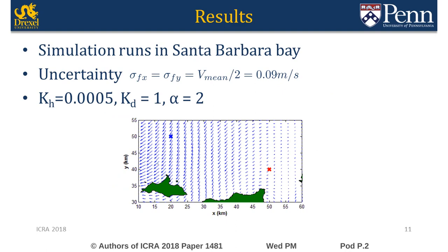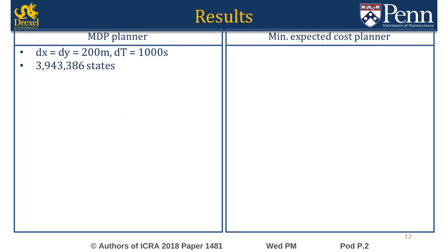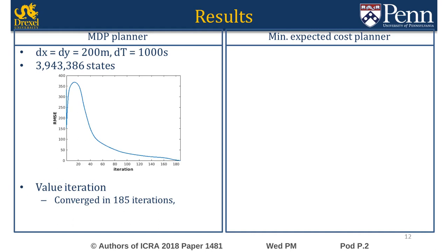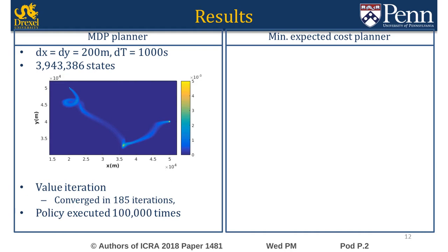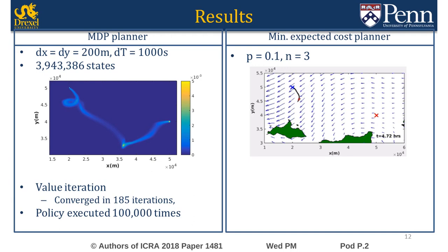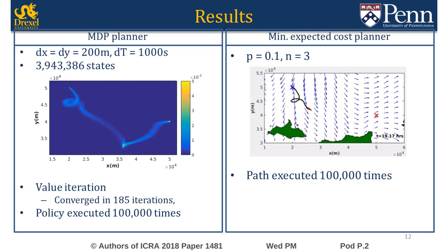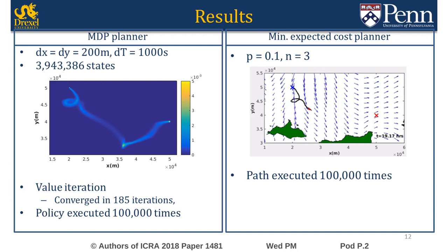The two methods were used to compute optimal policies and paths in the Santa Barbara Bay. For the MDP planner, the space was discretized to get nearly 4 million states. Value iteration converged in 185 iterations. The converged cost vector was used with the optimal policy to obtain 100,000 policy realizations. A histogram of these realizations is shown in the figure. The expected cost path planner was also used to compute a minimum expected cost path. The path was run 100,000 times in an uncertain flow and the statistics are shown in the table.